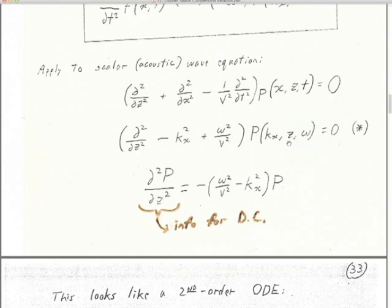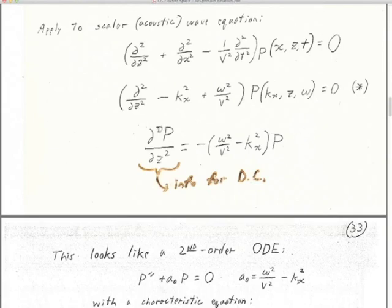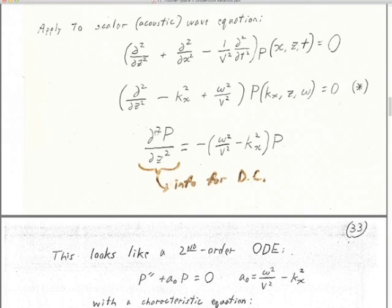That's the wonderful thing about these partial derivatives — we don't have any compound derivatives, so everything is really very nicely linear. It's our choice: I could have transformed from z to kz and left x alone, or left time alone. It doesn't matter. So now what have I got? d²p/dz² is equal to (−ω²/v² − kₓ²) times the wave field. kₓ and ω are real numbers, so we just have some real numbers multiplied by the wave field — there aren't even any complex numbers here.